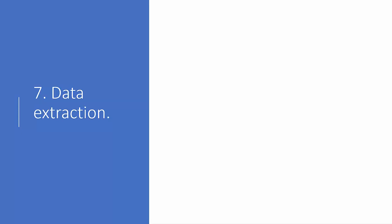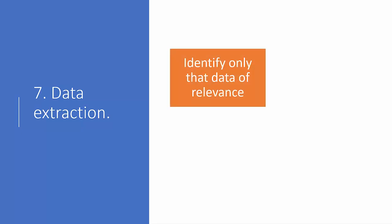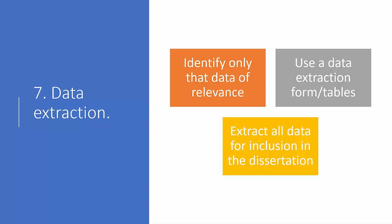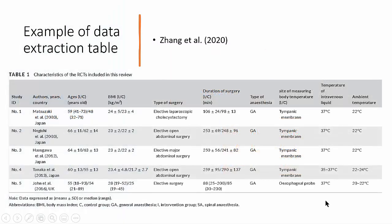On to step seven: data extraction for each paper. Step eight, quality assessment, may be interchanged with this step in ordering; however, I personally agree with Boland's order here, as the process of extracting the data is a necessary component of critically appraising your remaining research papers. Take care to only identify data of direct significance to your research question, as many papers will have secondary questions and associated data. To help with data extraction, it is a good idea to create a data extraction form or table. An example of a data extraction table is shown from Zhang et al. 2020.